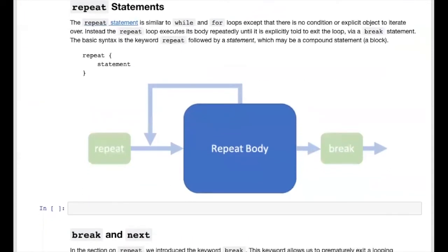The repeat statement is a little different from the while and for statements because it does not have an explicit condition under which it executes its loop body. Instead, it repeats the execution of its loop body basically forever, unless explicitly told to stop using the break statement. In the diagram, we begin with the repeat keyword and repeatedly execute the loop body until the break keyword is evaluated, at which point we exit and continue with the rest of our code.